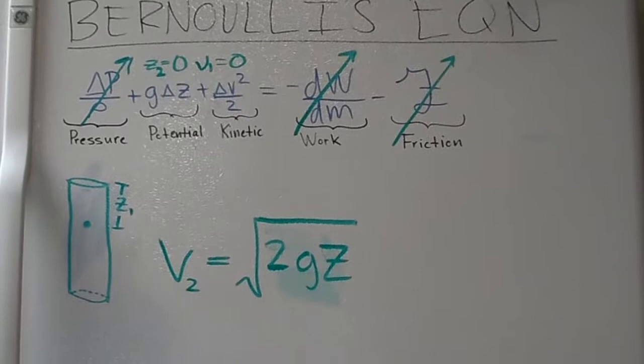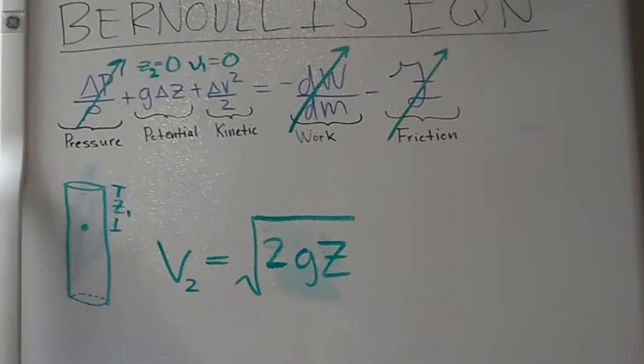Today we're going to be talking about Torricelli's equation. Torricelli's equation is basically a derivation of Bernoulli's equation, which we have written up here on the whiteboard.